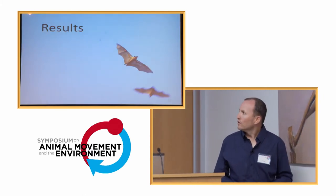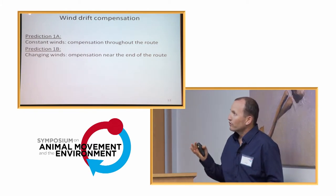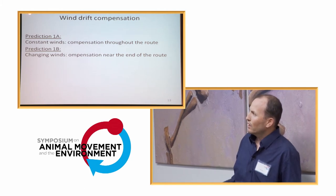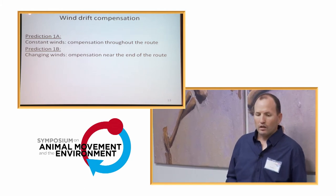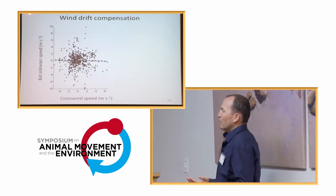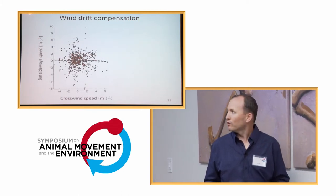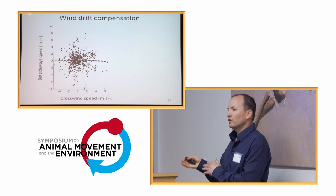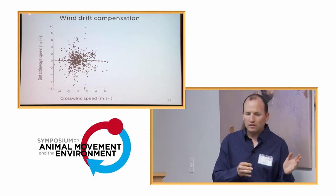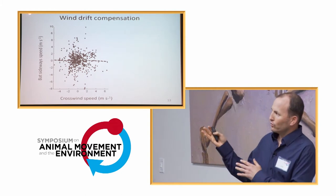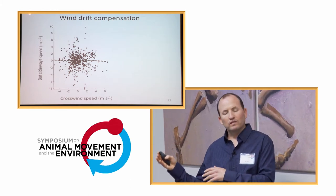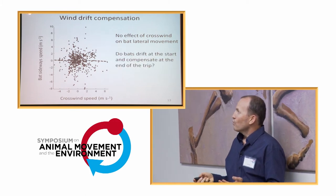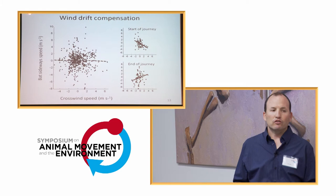So, the results. First, regarding wind drift compensation. So, these are the two hypotheses that we had. And we looked at the data and saw that there was no correlation whatsoever between crosswind speed and sideways speeds. And we wanted to check if this relates to different segments along the way. For example, there's this prediction that the bats will only compensate at the end of their journey. So, we couldn't find this particular effect. We actually found the opposite.